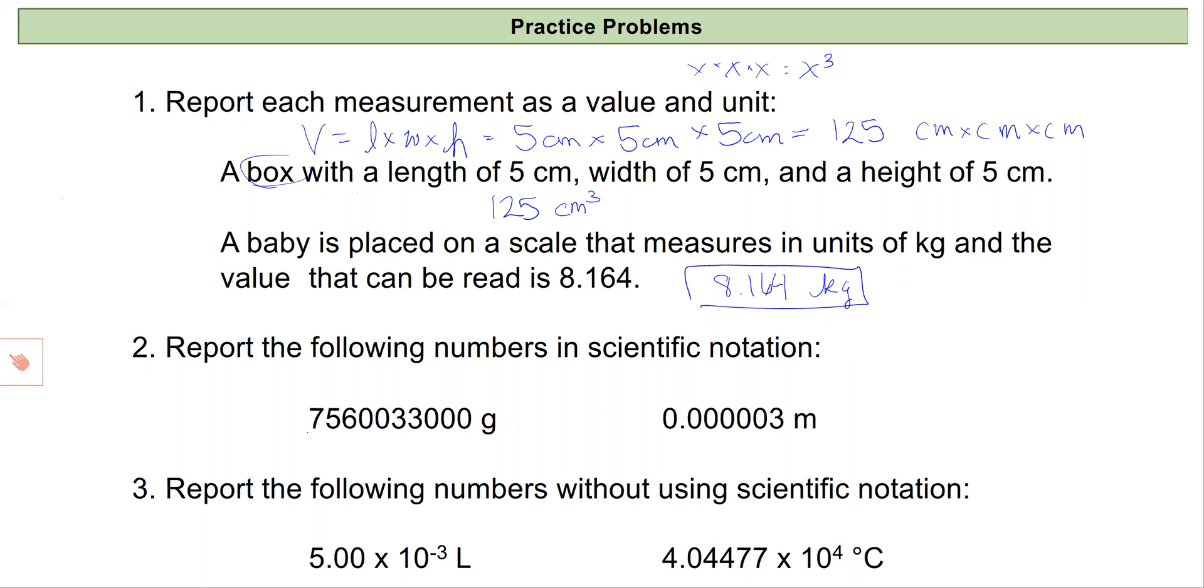For this first one, the first thing I'm going to do is take my non-zero numbers right here and represent that as a decimal: 7.5600033. And then I'll multiply this by 10. To figure out the exponent, I'll take my decimal place, which is at the end of the number, and move it back one, two, three, four, five, six, seven, eight, nine places.